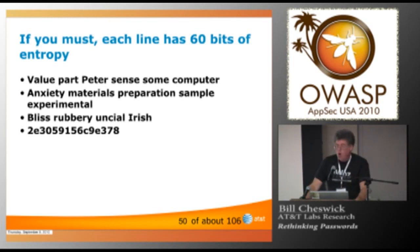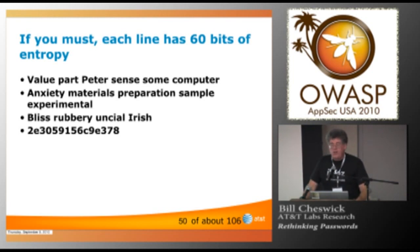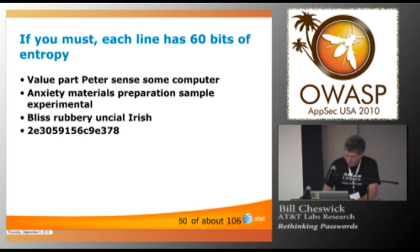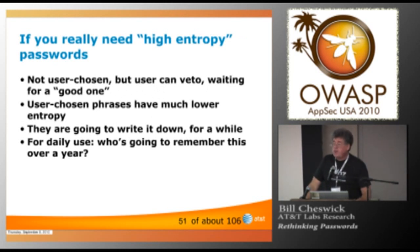And now we get to the third one: 'Bliss rubbery unseal Irish.' That's a really big list of words, but you only need four of them. Or you can do what Peter Honeyman did. He said, okay, 60 bits. I'll print them out in hex and memorize them. And for a few months, he carried a sheet of paper around. And after a while, he memorized it. Now, I should point out that the Honeyman password is not going to pass the strong password test. It doesn't have special characters in it. There's no capital letters. At least it doesn't use a space. And if you do this, you cannot be user chosen. You can have a user reject a suggestion and do that thousands of times if they want, waiting for something more memorable. User chosen phrase is a much lower entropy because they contain information.